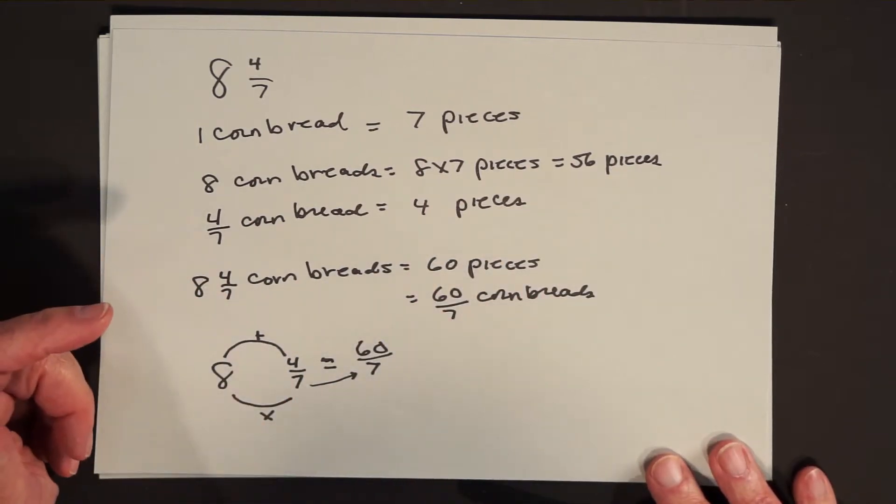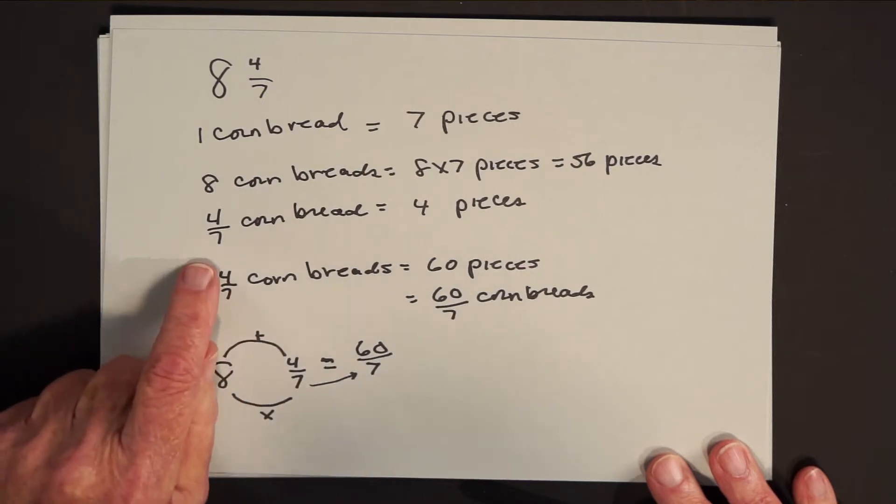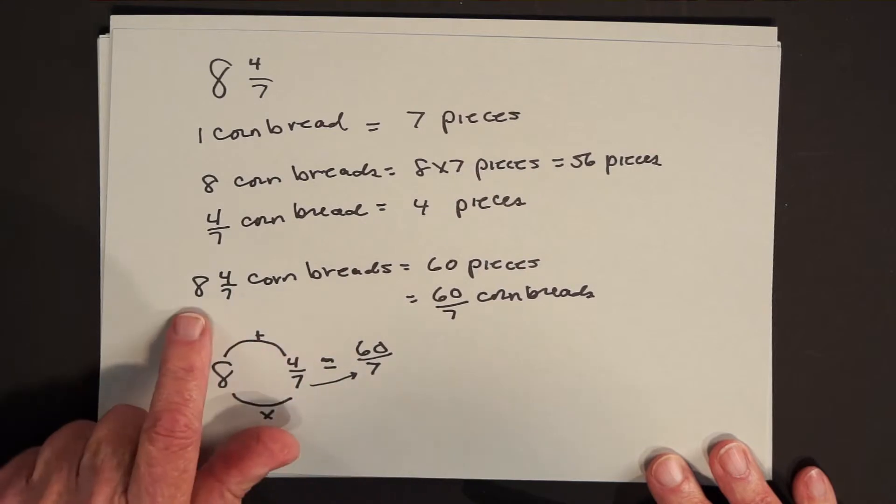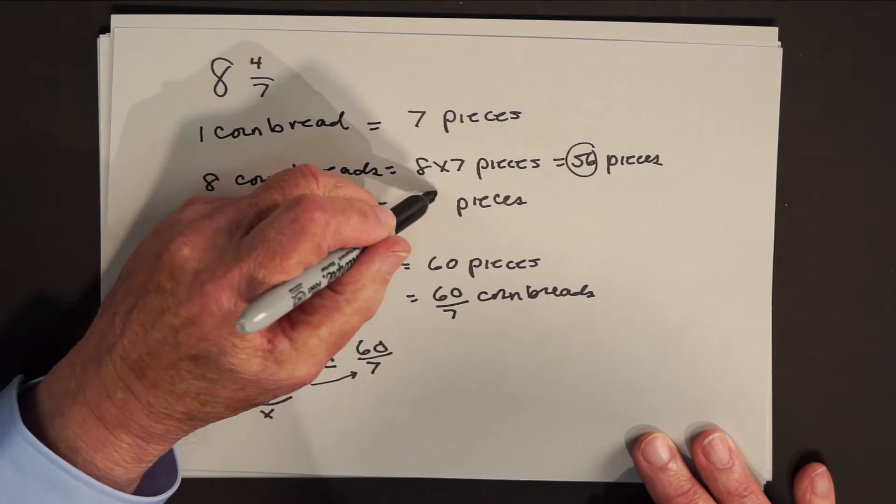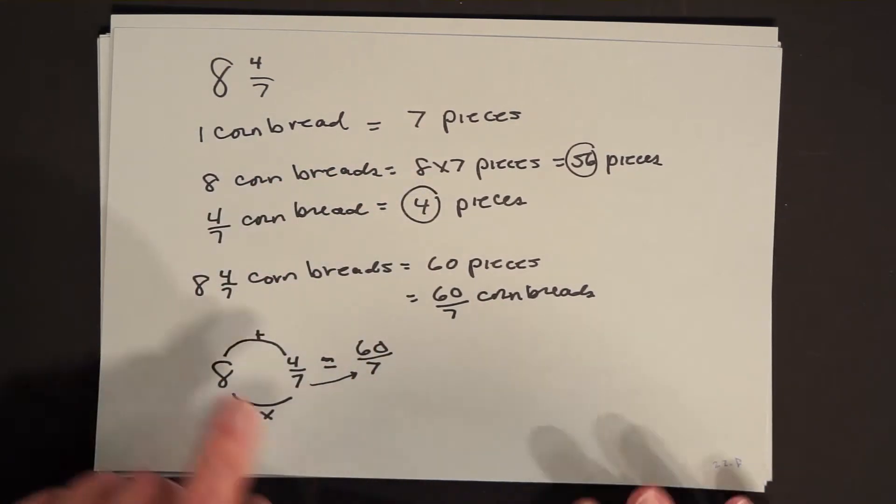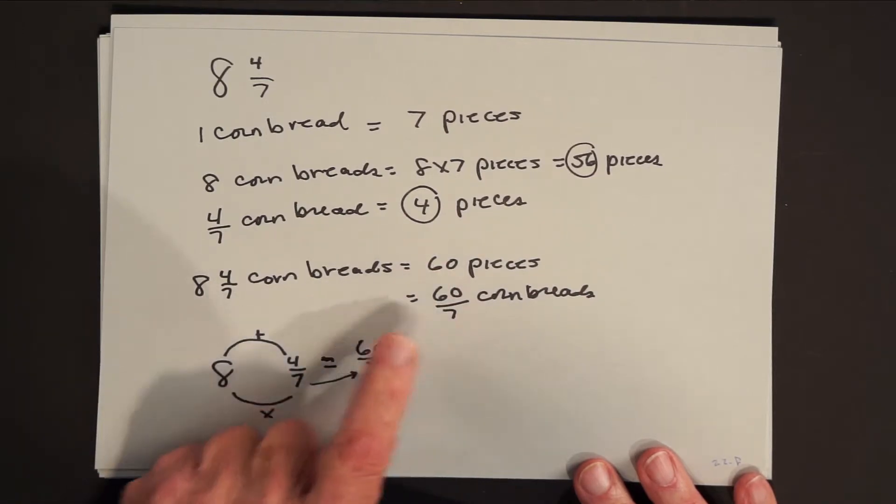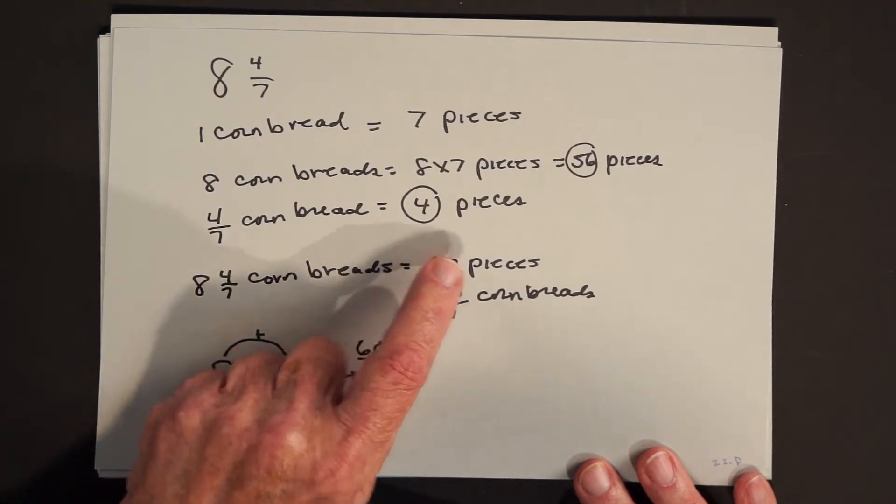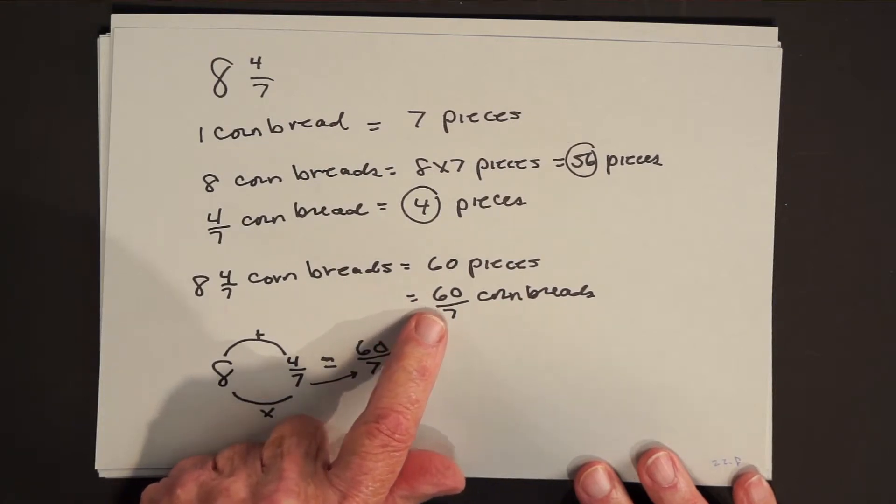4 sevenths of a cornbread, well, all we've done here is really disguise the fact that we're using a piece to describe 1 seventh of a cornbread. So 4 sevenths of a cornbread is 4 pieces. So 8 and 4 sevenths cornbread is altogether what? 56 pieces plus 4 pieces are 60 pieces. In other words, 8 and 4 sevenths is not the same as 60. But 8 and 4 sevenths cornbreads is the same as 60 of what it takes 7 of to make the cornbread. And that would be 60 over 7.